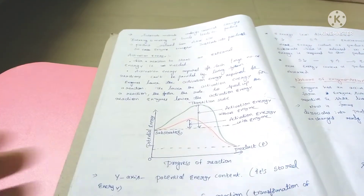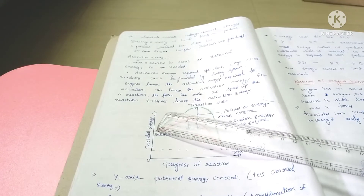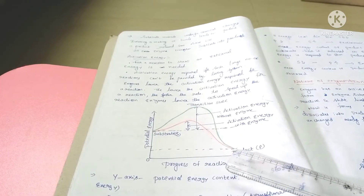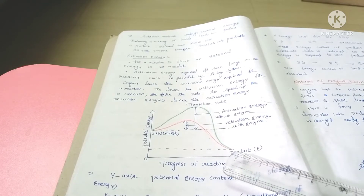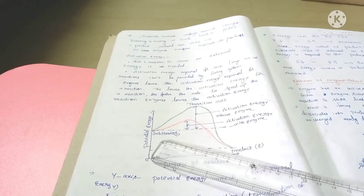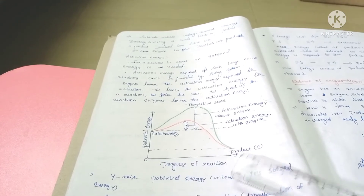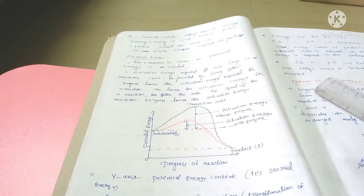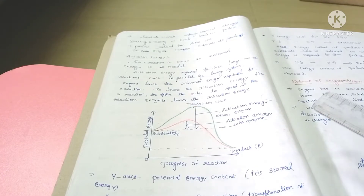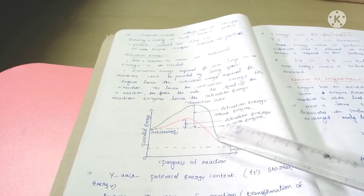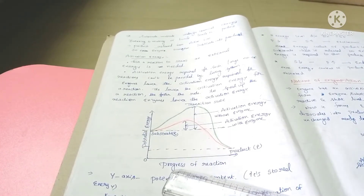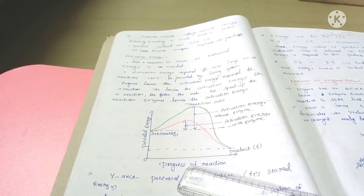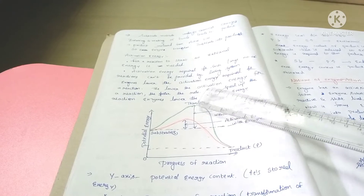Looking at this graph, the substrate is at one energy level and the product is at another. The substrate is at a high energy level and the product is at a low energy level — that means it is an exothermic reaction. If the product is at a high energy level and the substrate is at a low energy level, that is an endothermic reaction. We need to observe this graph carefully.